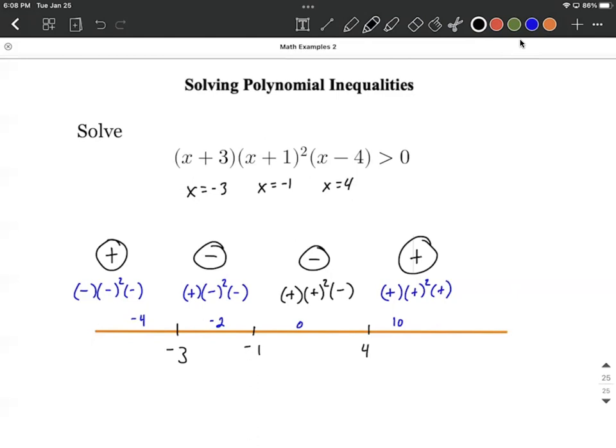So each one of these values that we put below the number line, the negative three, negative one, and four, those are when our actual function is going to equal zero. It's going to be on the x-axis. We're going to have a point on our x-axis for that polynomial function that's been factored on the left-hand side. But then the overall graph is going to be above the x-axis where we put pluses, positives, and then below the x-axis where we put negatives.